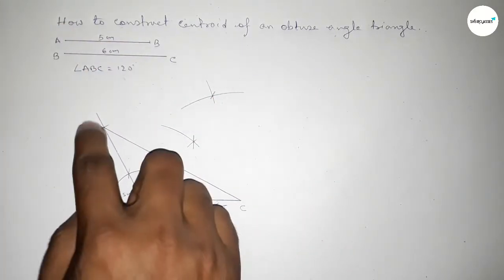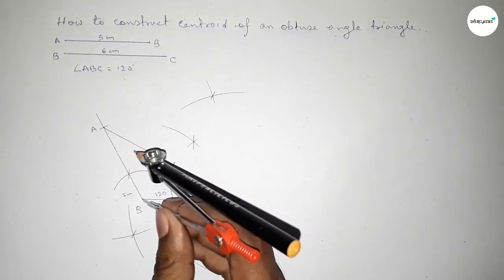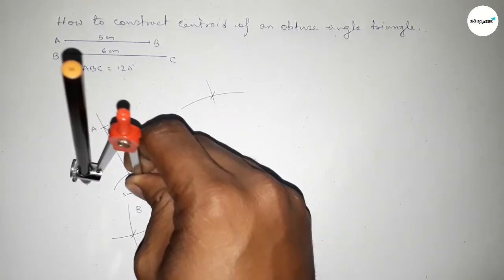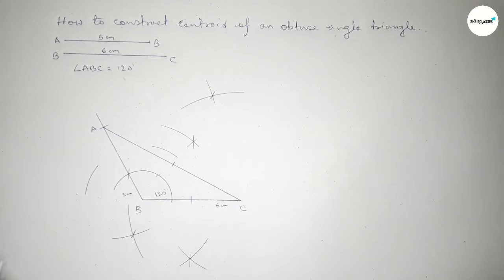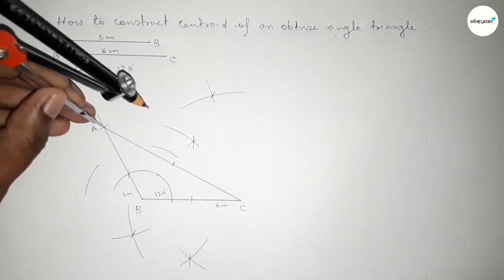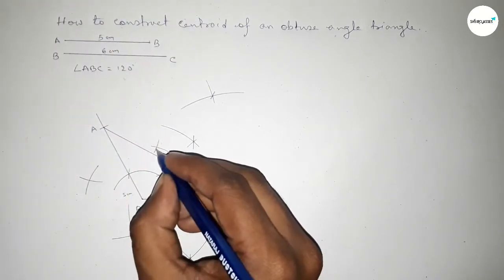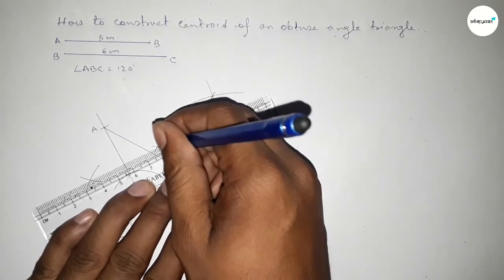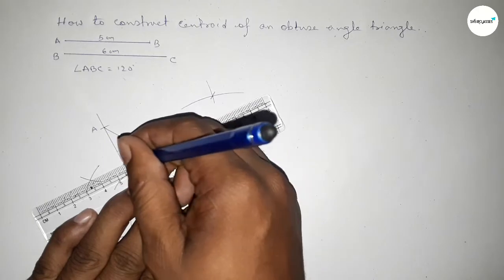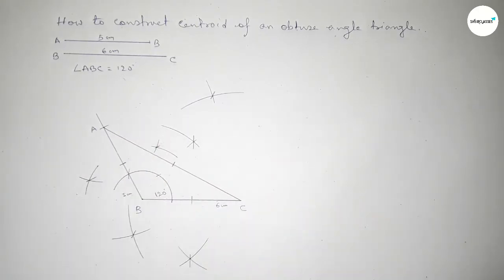Now bisecting line AB. Putting the compass at A and taking a length greater than half of AB, drawing an arc. With the same length, putting the compass at B and cutting arcs so both curves intersect at two points. Joining these points gives a line that bisects AB at its midpoint.